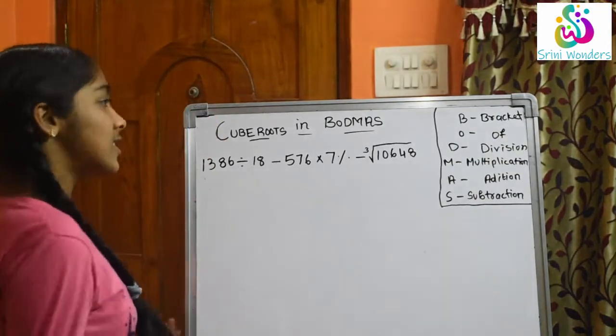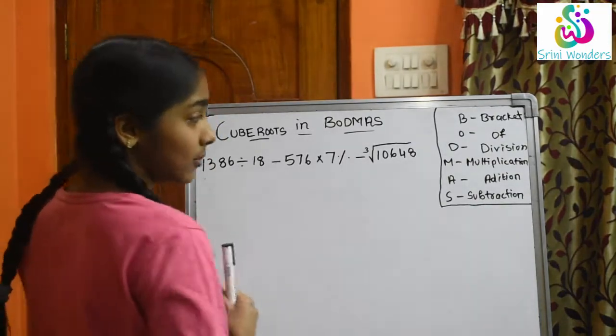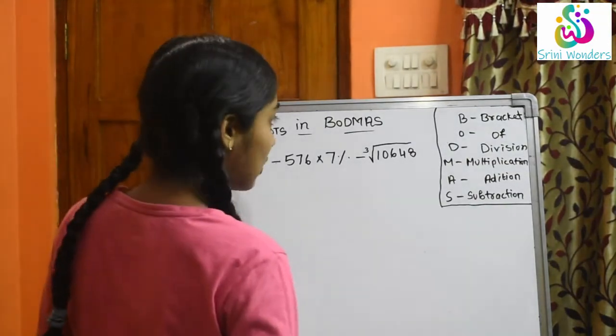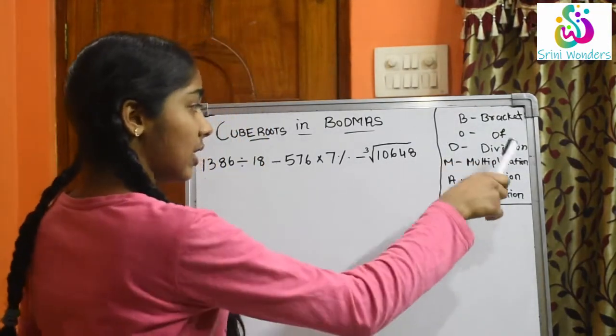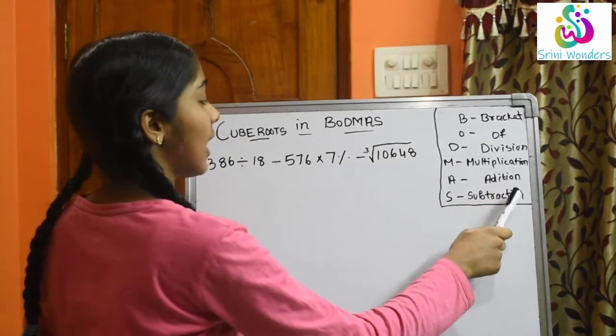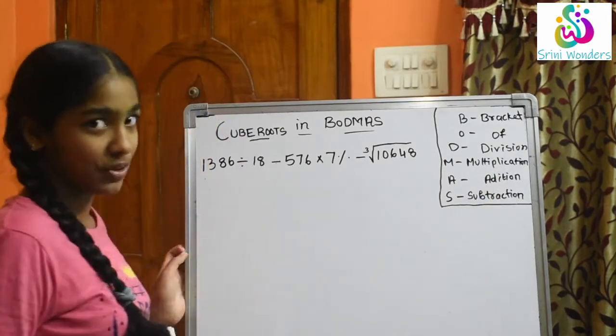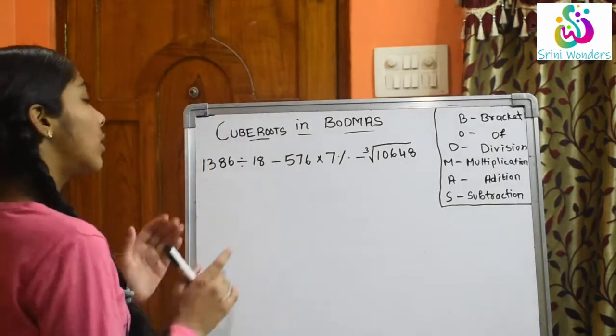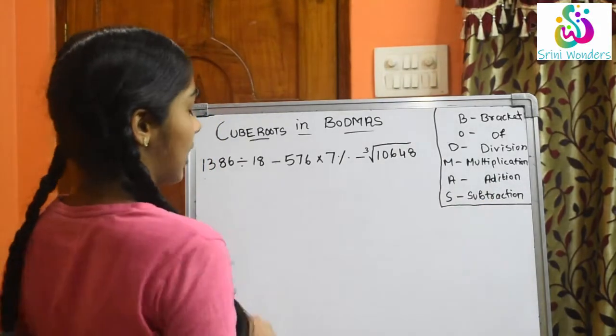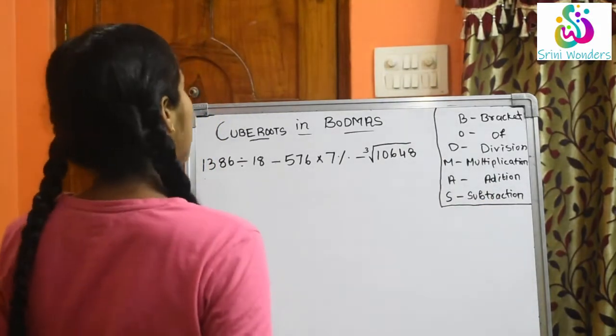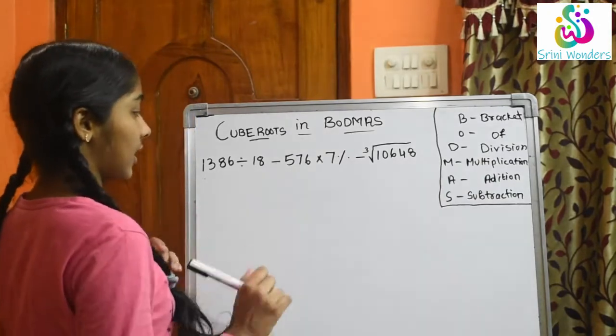So first, what is BODMAS? BODMAS means Bracket, Of, Division, Multiplication, Addition and Subtraction. Now let us see an example with cube roots in it.